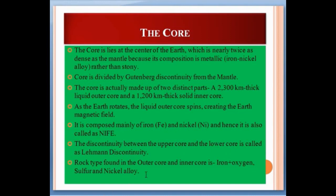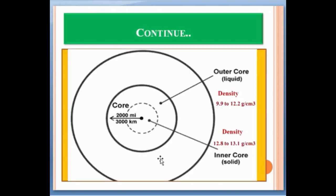The discontinuity between the outer core and the inner core is called the Lehmann discontinuity. The rock type found in both the outer core and inner core is an iron-oxygen-sulfur-nickel alloy. The outer core is in a liquid state while the inner core is solid. The density of the inner core is 12.8 to 13.1 grams per centimeter cubed, while the density of the outer core is 9.9 to 12.2 grams per centimeter cubed.